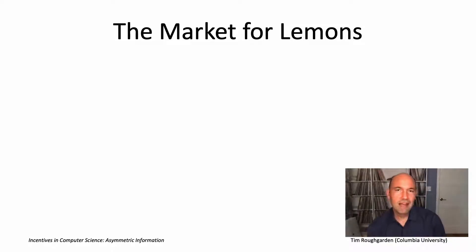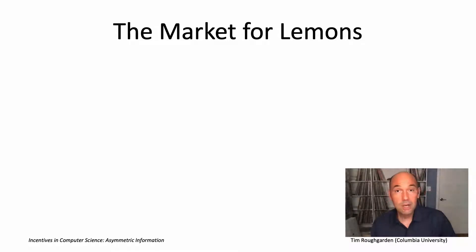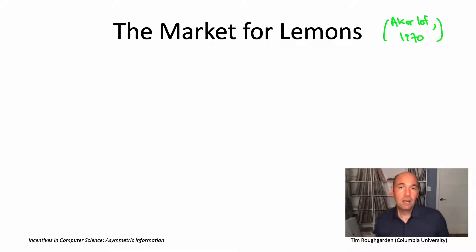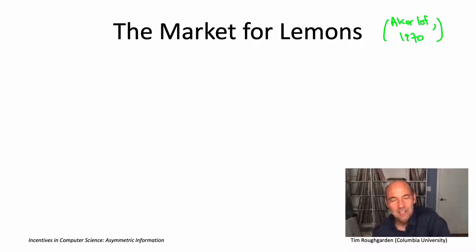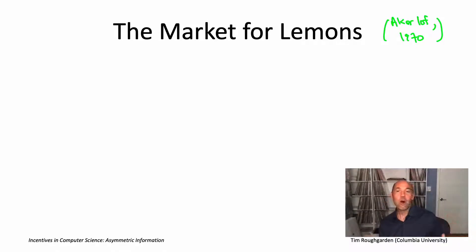The classic example of adverse selection is what's known as the market for lemons, something which was written about by George Akerlof back in 1970. This is one of the reasons that Akerlof won the Nobel Prize in Economics in 2001. Just to be clear, 'lemon' in the market for lemons is not referring to the citrus fruit — it's a word for an old car which no longer works.